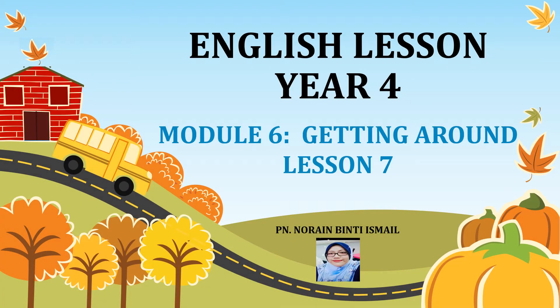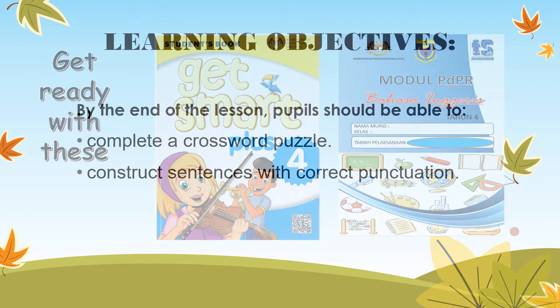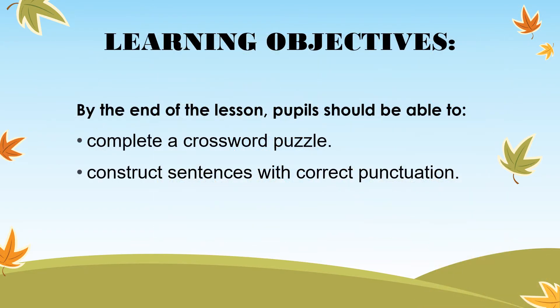Hello everyone. We are still in module 6, Getting Around, and we are going to continue with lesson number 7. As usual, please get ready with your Get Smart Plus 4 Students Book and your PDPR module. Before that, let's look at the learning objectives for today. By the end of the lesson, you should be able to complete a crossword puzzle, then construct sentences with correct punctuation.